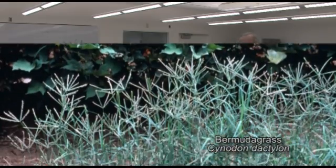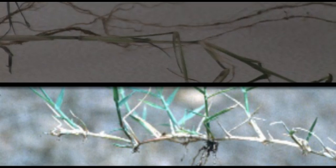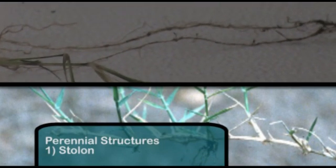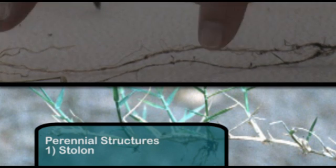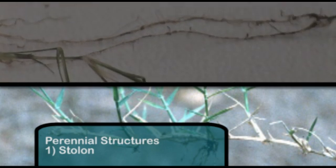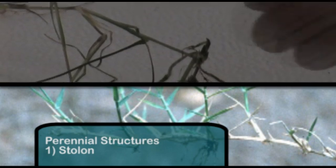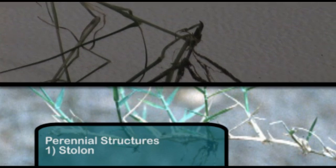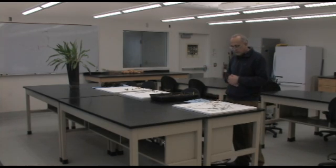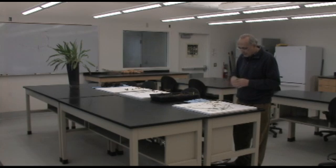This is Bermuda grass, Cynodon dactylon, a very important perennial grass. It has two types of structures which are horizontal stems. Some of those go above ground and we call them stolons — they have nodes, and from the nodes you can get new roots and new shoots, even creating independent plants. These spread laterally, and the same thing applies to other stems which are underground, called rhizomes.